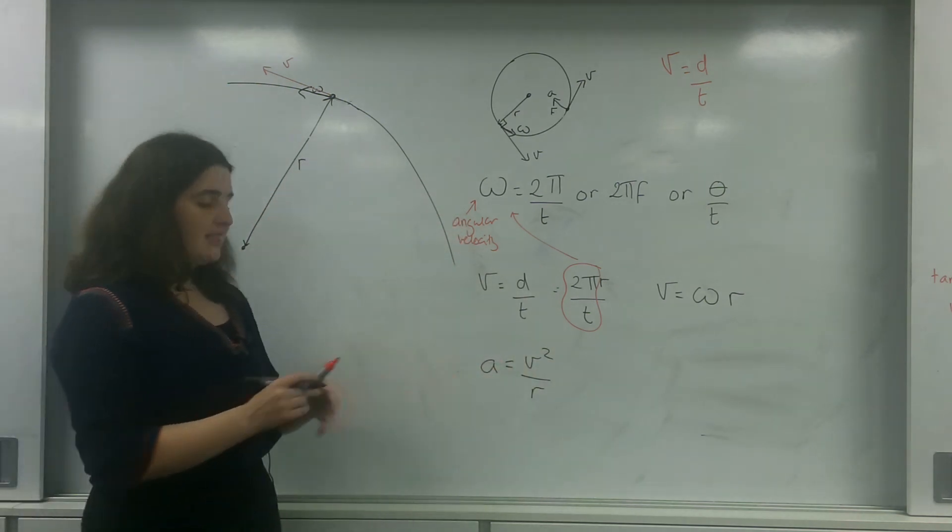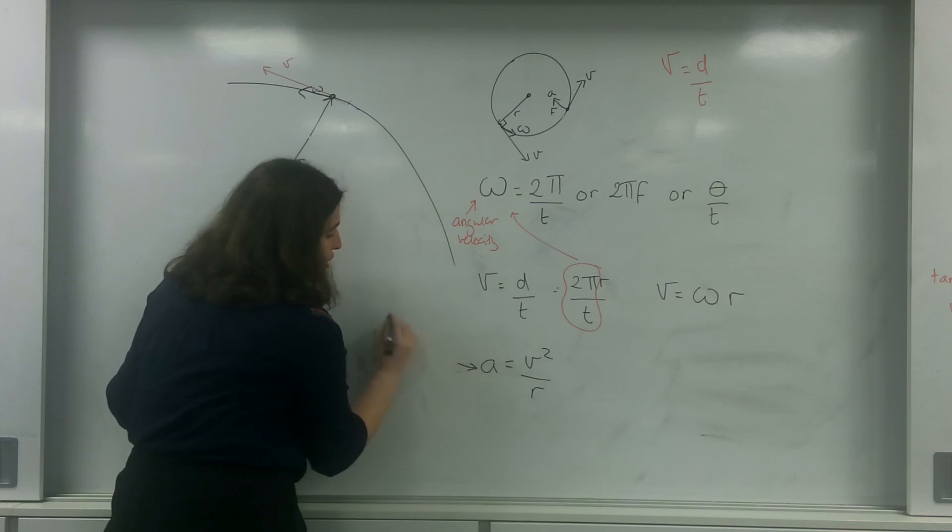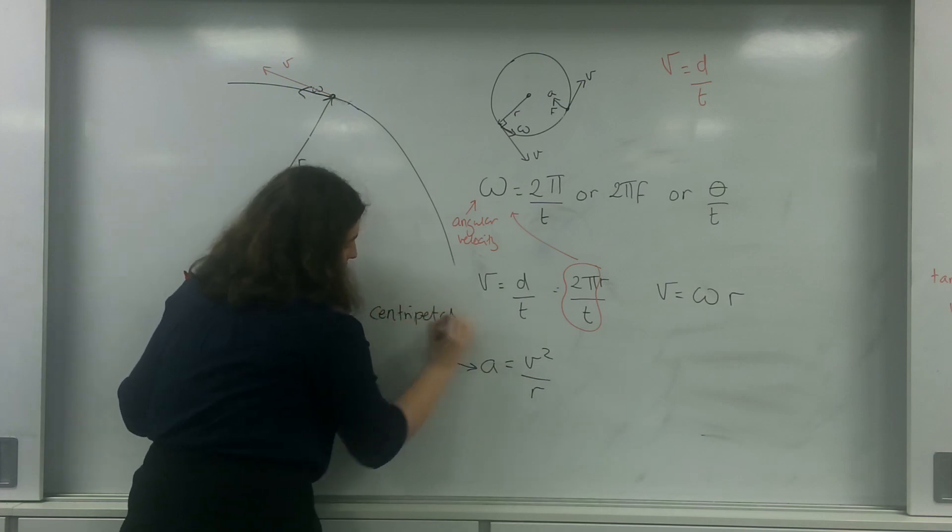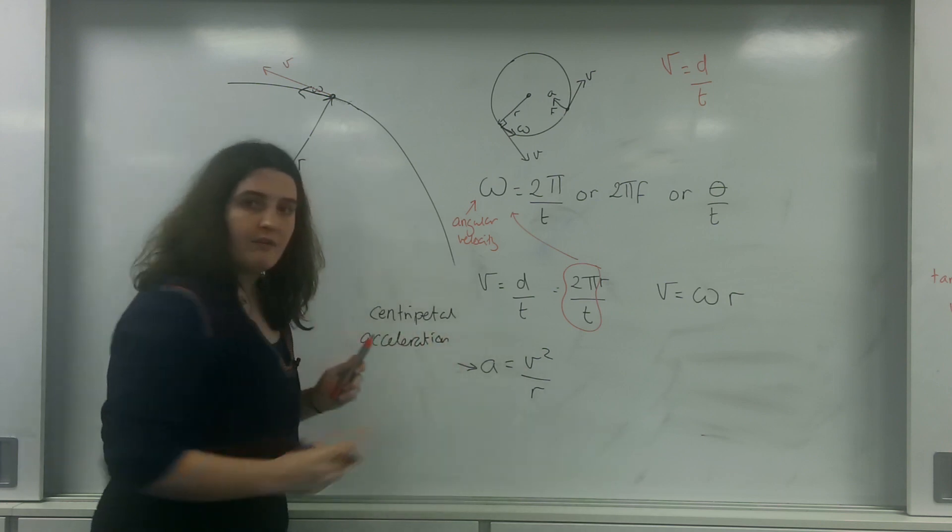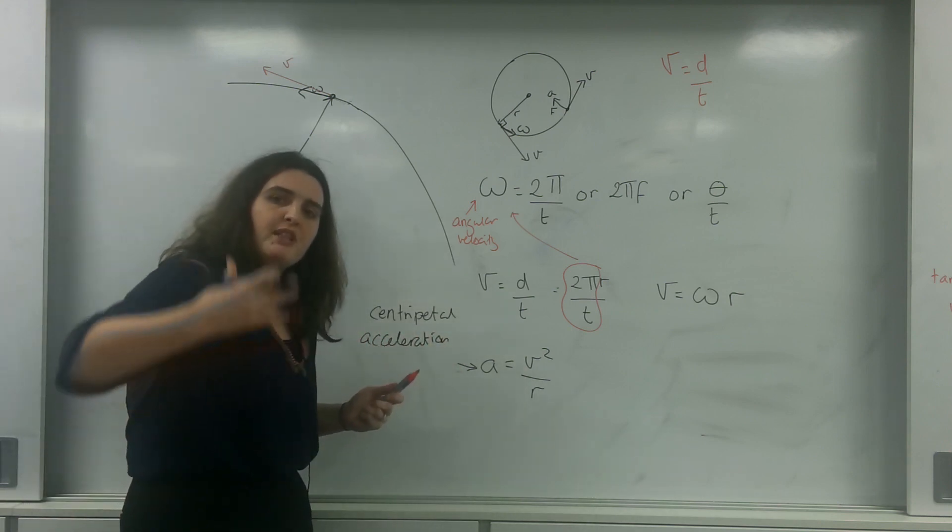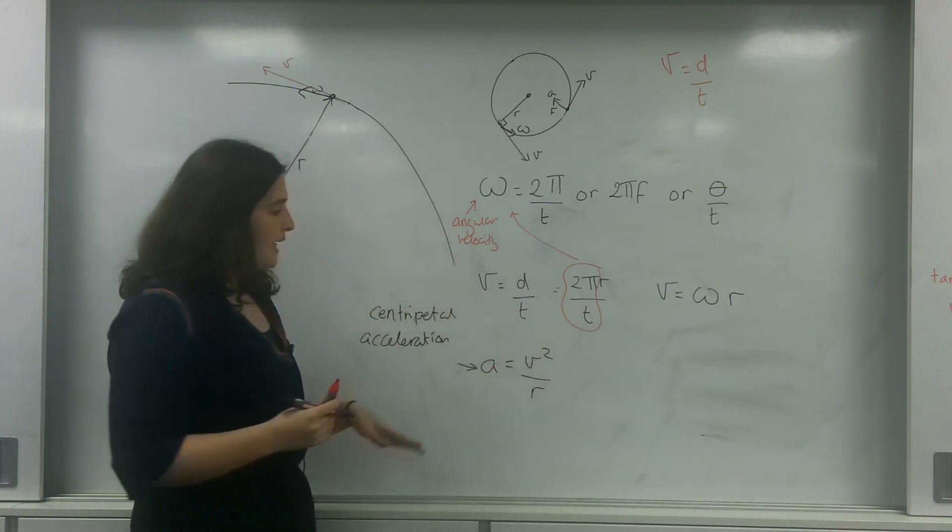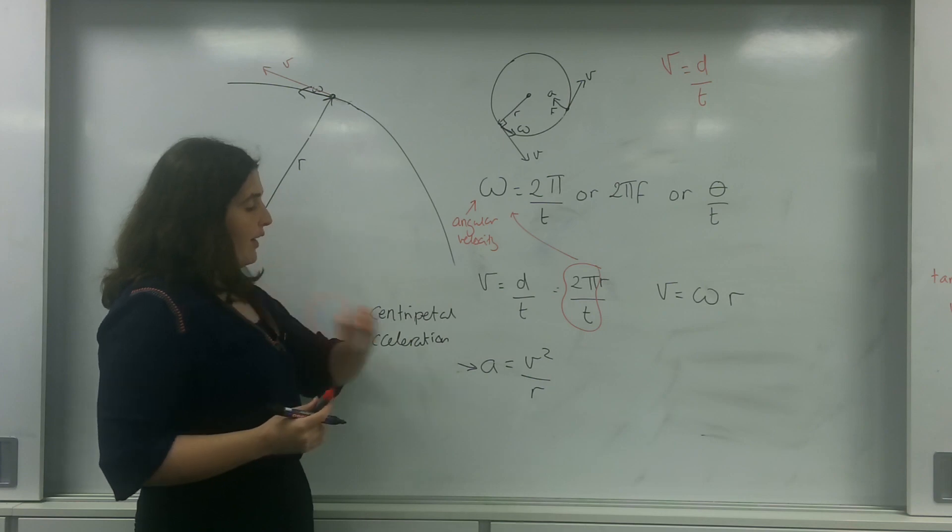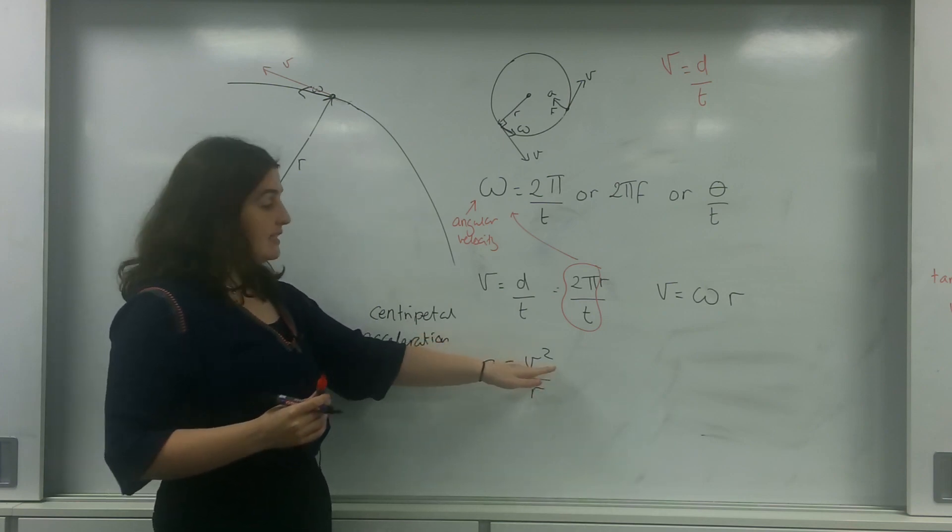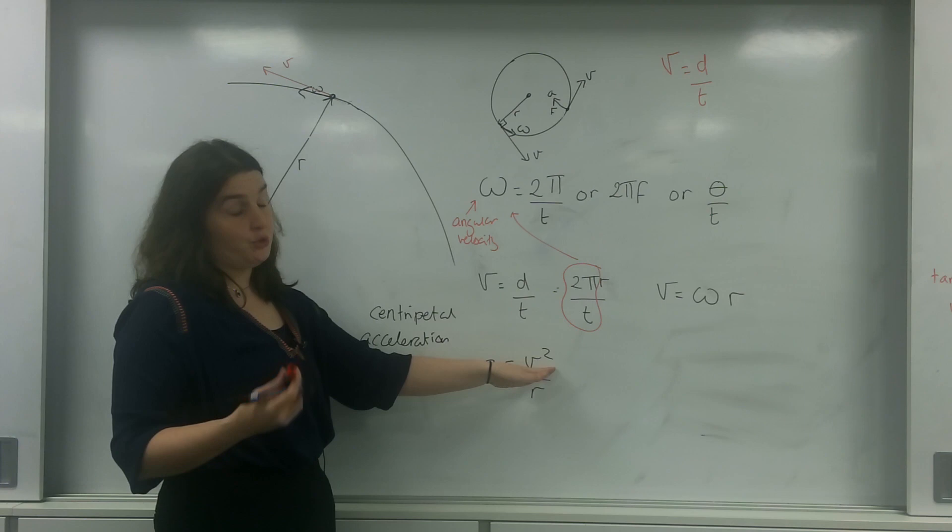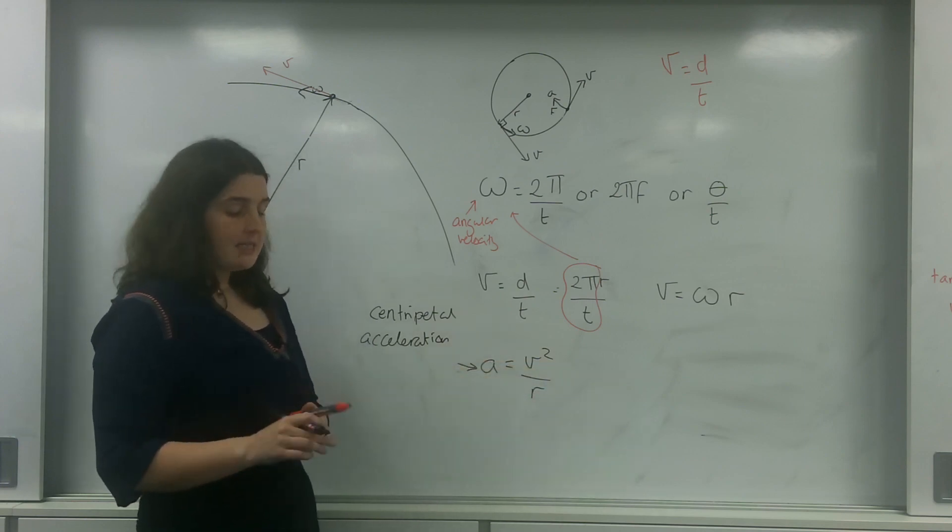So, acceleration is v² over r. The acceleration, this is the centripetal acceleration. This is the acceleration that is caused by the centripetal force. This is the acceleration back into the center of the circle. It can be related by the formula v², so this is the tangential velocity, or tangential speed, over the radius.